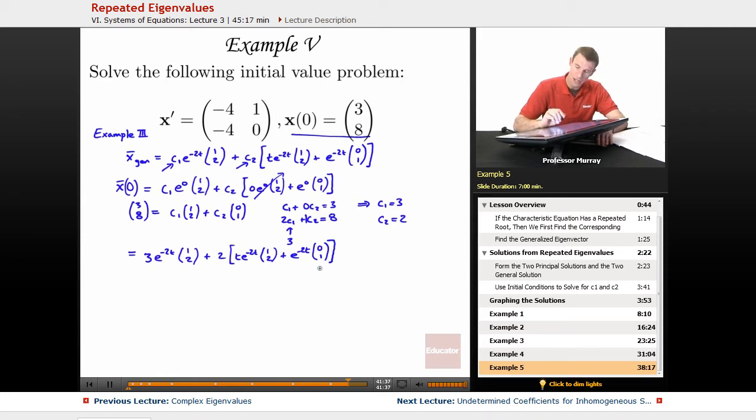And I see that I could simplify a little bit because this 2 e to the negative 2t, I could combine it with this 3 e to the negative 2t. The t part I'm going to have to write separately. So, let me expand out this right hand set of terms here. This is 2t e to the negative 2t times (1, 2), plus 2 e to the negative 2t times (0, 1).